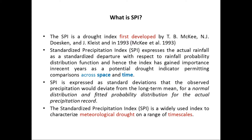SPI is an abbreviation for Standardized Precipitation Index, which is a drought index first developed by McKee et al. in 1993. The SPI expresses actual rainfall as a standardized departure with respect to a rainfall probability distribution function.